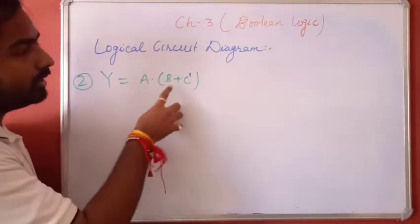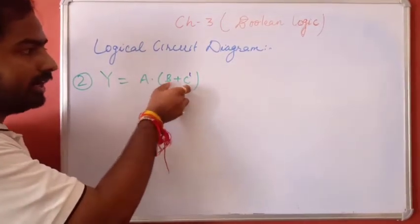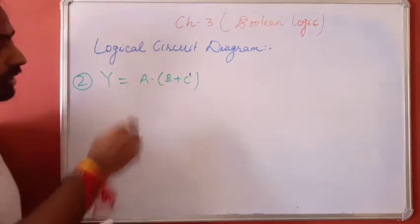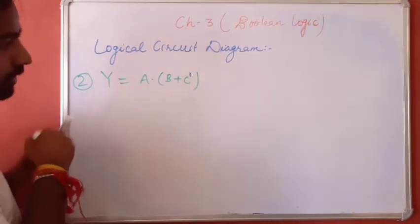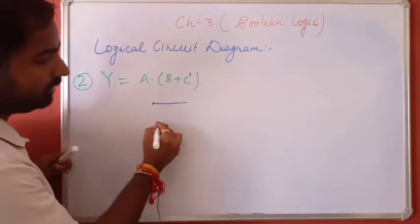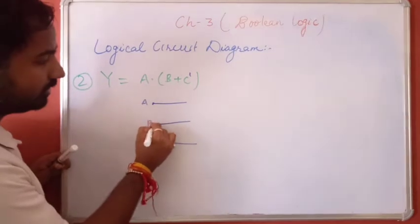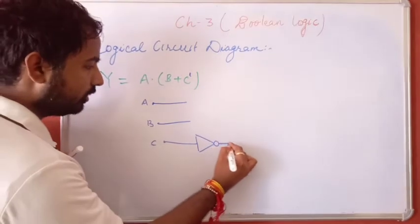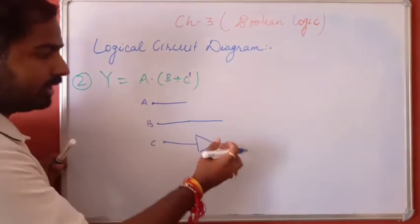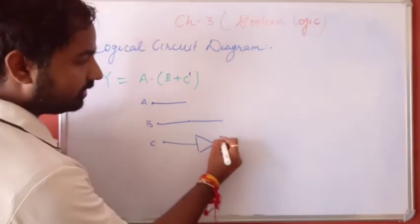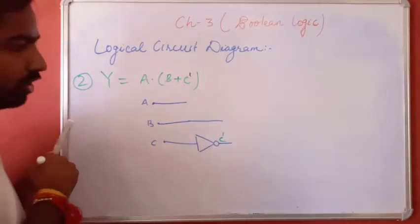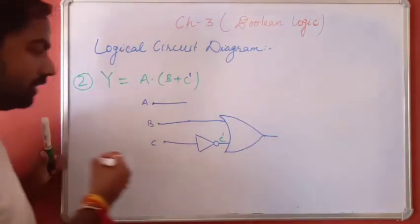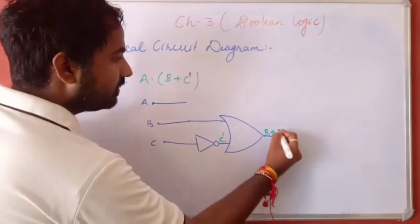In between B and C̄, OR operation is there, and whatever result is there, after that with A, AND operation is there. First implement: this is A signal, this is B signal, and this is C. In C, NOT operation is there first, so we implement a NOT gate — this gives C̄. Then between B and C̄, OR operation is there, so implement an OR gate. Then you have to implement a NOT operation on that result. Your result here is B plus C̄.